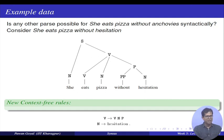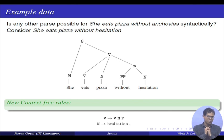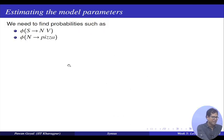So now we have two sentences — 'she eats pizza without anchovies' and 'she eats pizza without agitation' — and both have two possible parses. We know all the possible rules, and new rules added include V gives VP and NP, and N gives agitation. The task is: given these sentences, how do we find the ideal rule probabilities?